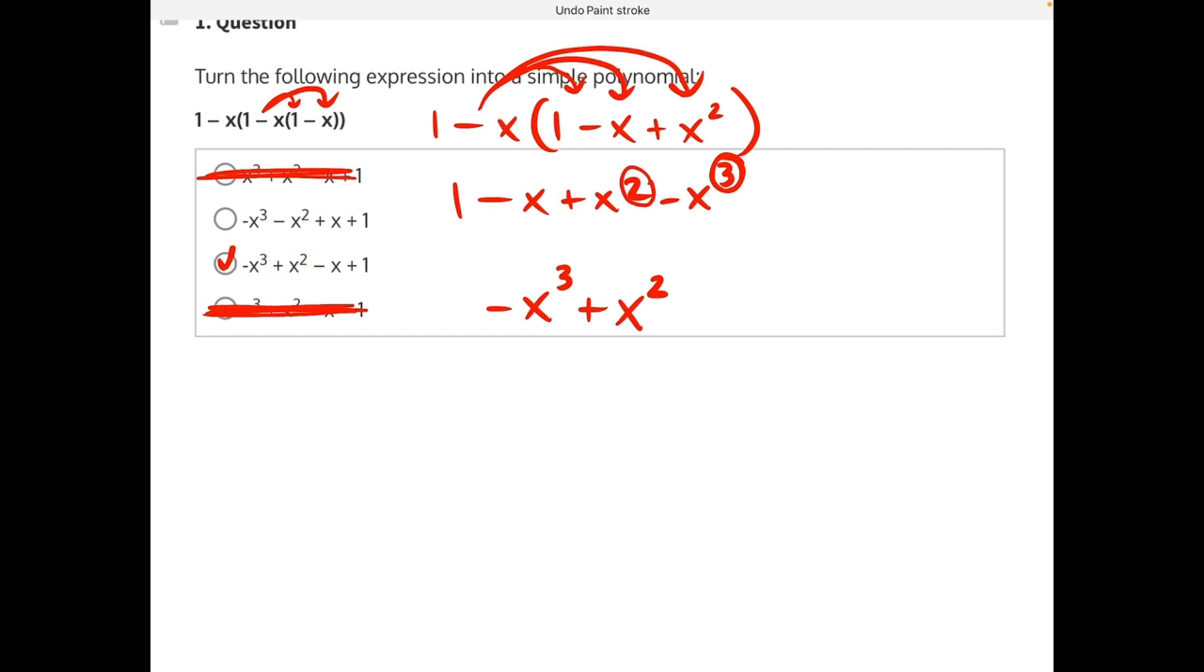But for the sake of the video, I will continue rearranging this expression. Our next highest power is x to this invisible one. So we would have negative, don't forget the sign, x to the 1. And then we would have our constants which is just a positive 1. So plus 1. Again, matching answer choice C.